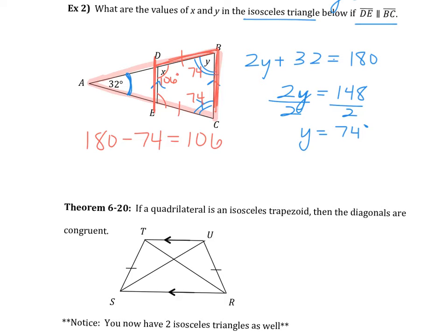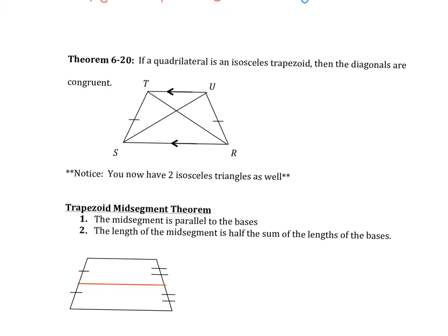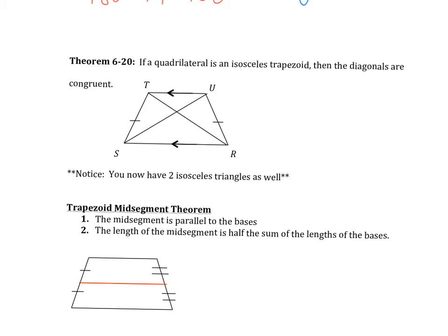Next theorem that we're going to talk about is theorem 6.20. You don't need to worry about the number. But what it says is if a quadrilateral is an isosceles trapezoid, then the diagonals are congruent. So because we know these two are the same and it's parallel and parallel, then we know that TR is congruent to SU. And I want you to think about how that goes then. If TR is congruent to SU, it's actually going to break it into those two are the same and these two are the same. That's angle addition postulate. The two parts equal the whole.